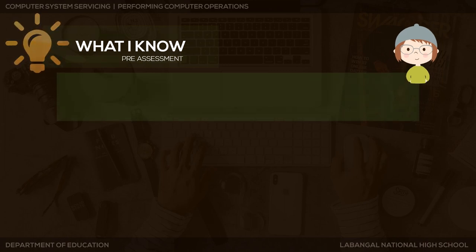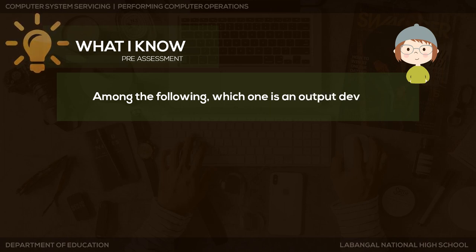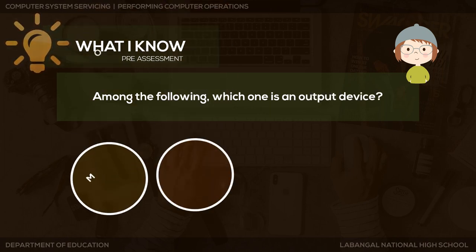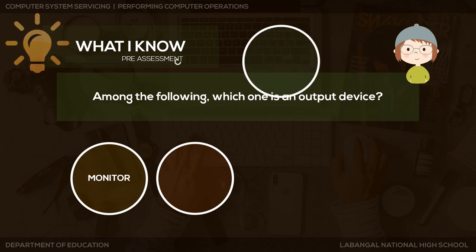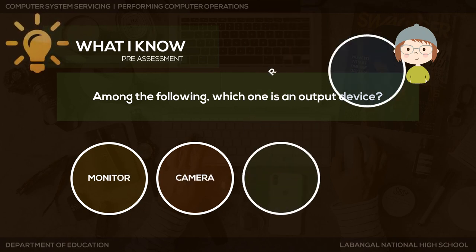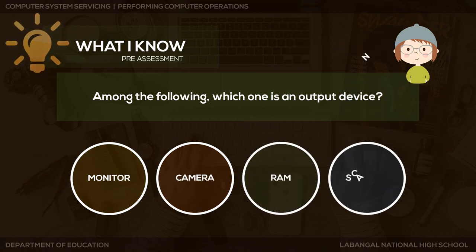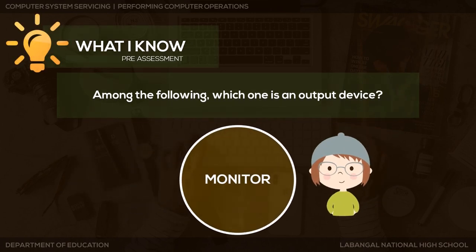Next question: Among the following, which one is an output device? Is it a monitor, a camera, a RAM (random access memory), or a scanner? Among the choices, monitor is the only output device — very good!